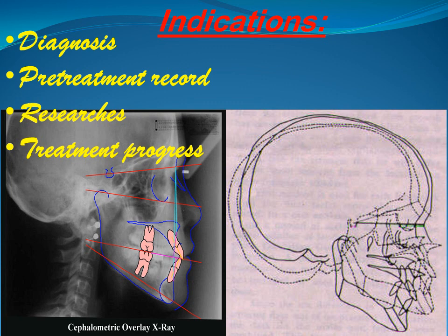There are different indications for the lateral cephalometric radiograph. First, diagnosis — in certain cases of malocclusion it is difficult to ascertain whether such malocclusion is skeletal or dental, and whether the maxilla or mandible, or both, are the contributory factor, unless by taking a lateral cephalometric radiograph. The second indication is as a pre-treatment or baseline record before orthodontic treatment, especially in cases involving movement of the incisors. Other indications include research purposes, particularly for growth and developmental studies, and for monitoring treatment progress such as when there is an impacted or erupting tooth.